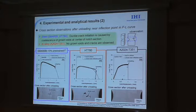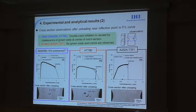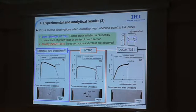I investigated the location of ductile crack initiation using cross-section observations after loading near the inflection point for each material. For SM400B, a pre-strained material prepared separately was used for observation. For steels, we can see that ductile crack initiation is caused by coalescence of voids at the center of the notch section, where the triaxiality is maximum. On the other hand, aluminum alloy has no such voids, as shown in this figure.